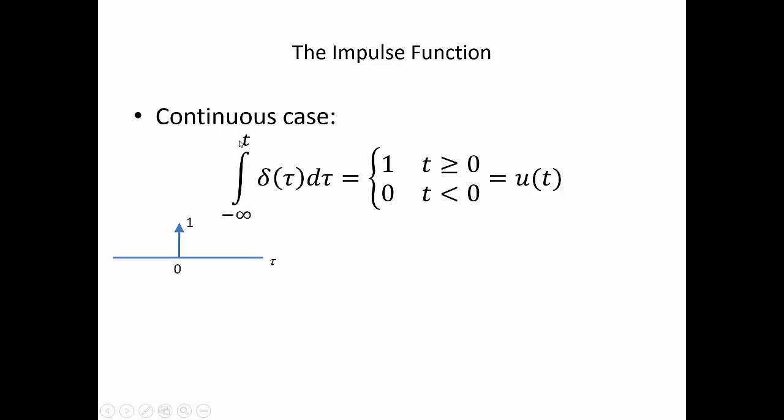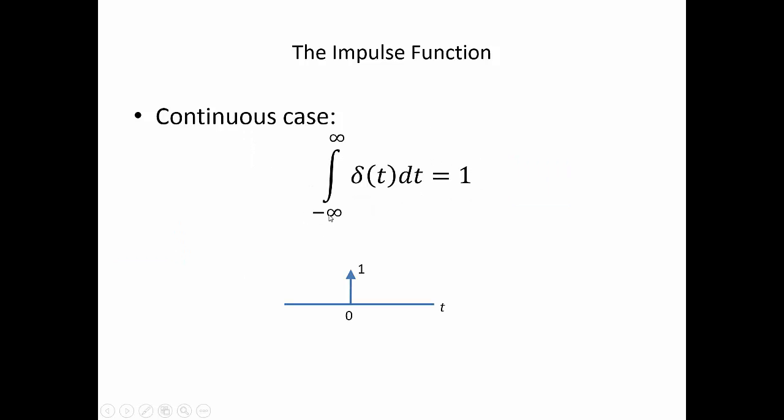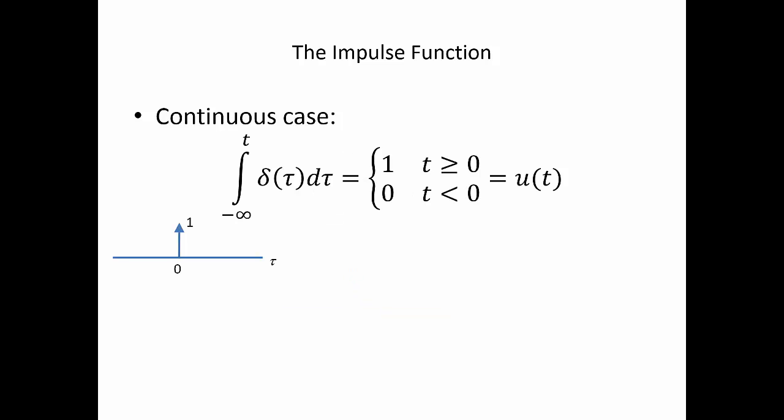Notice this has an integral up to t. As we saw before, if we're integrating from minus infinity up to positive infinity, our area is 1. Here we're integrating from minus infinity up to t. So our area is the step function. It's not always 1. It's only 1 for positive t.